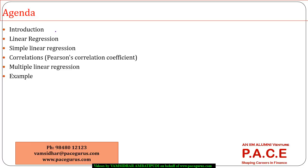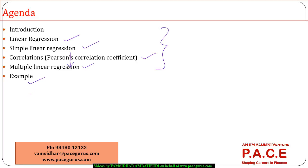We will try to understand what regression is all about. Within regression, the most popular form is linear regression. Within linear regression, we talk about simple linear regression. We will see what simple linear regression is all about, and what role correlation plays in the process of regression.